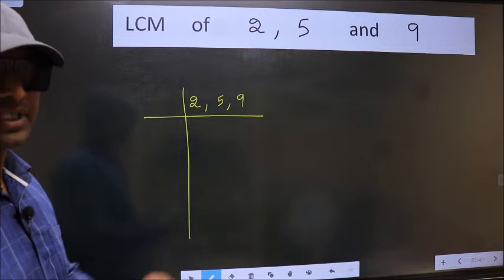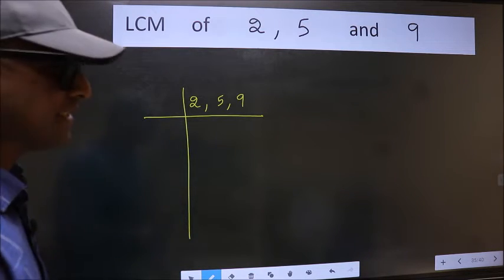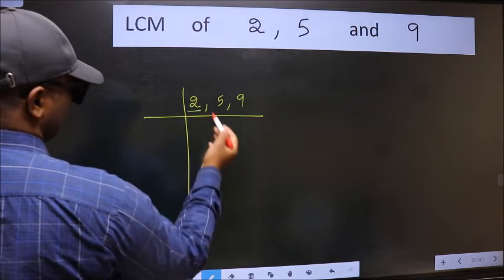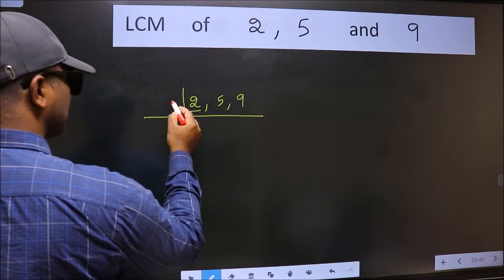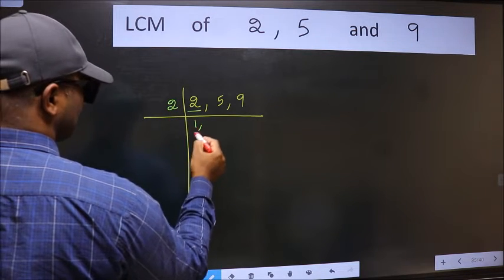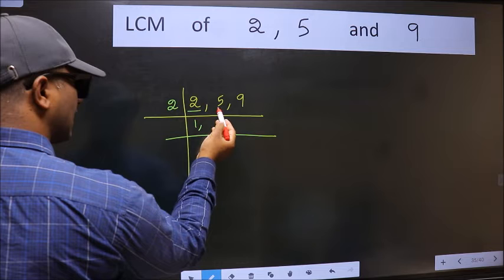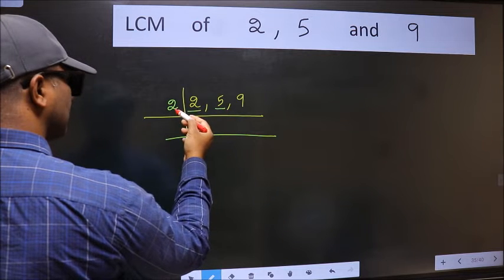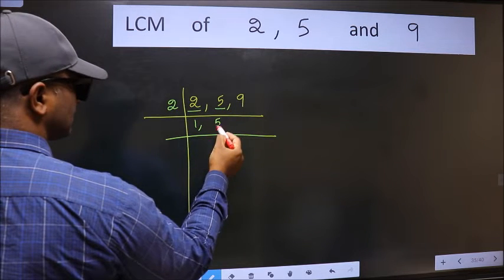Now we should focus on the first number which is 2. 2 is a prime number, so 2 divides 2. The other number 5 is not divisible by 2, so you write it down as it is.